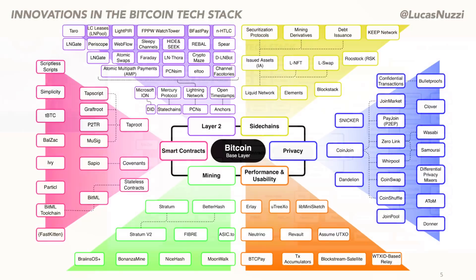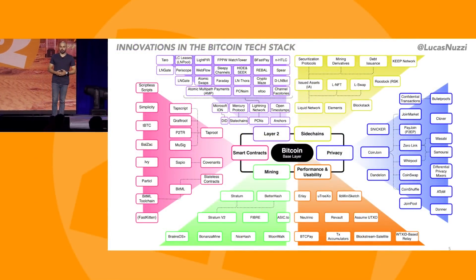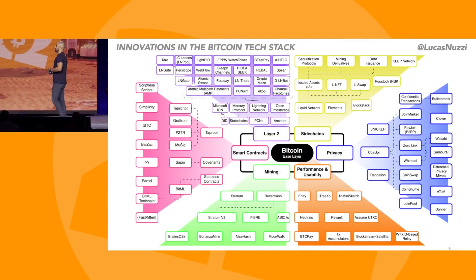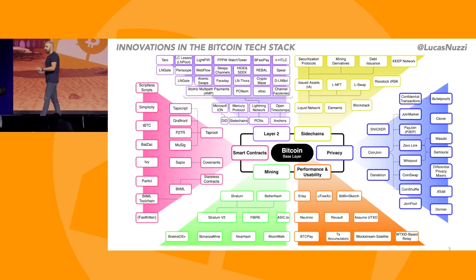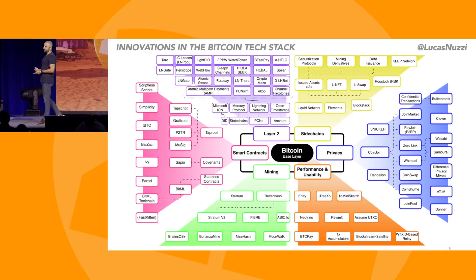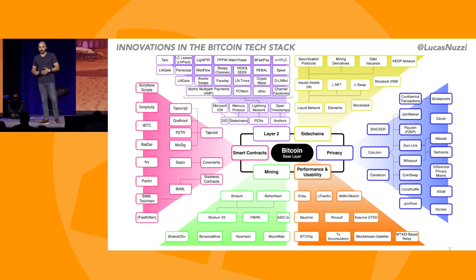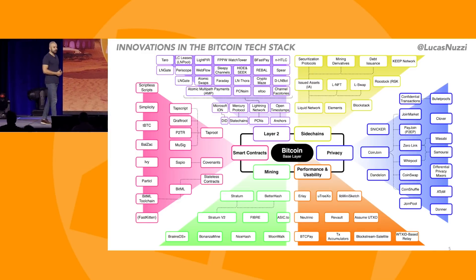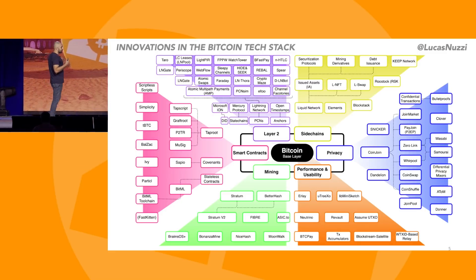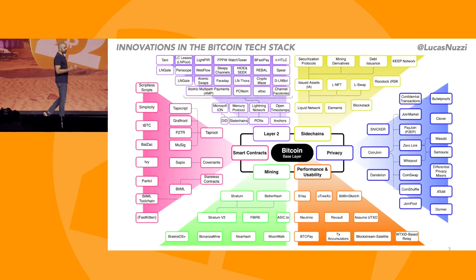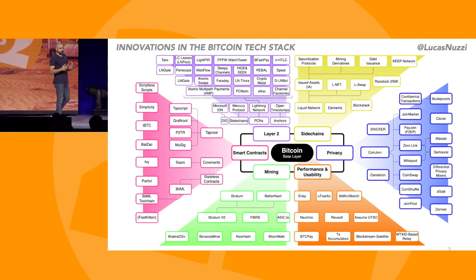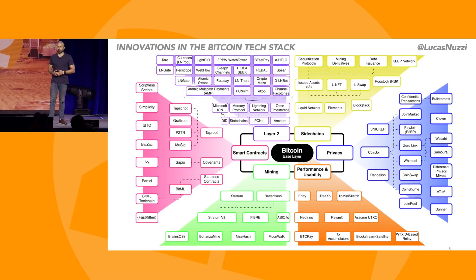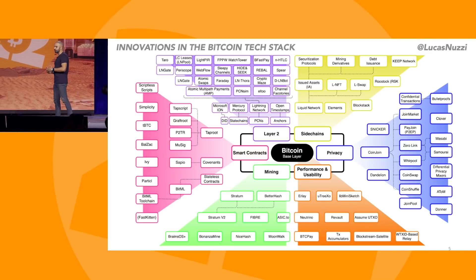If you start looking into the layer two section of this diagram, half a dozen of these protocols have been released in the past year alone. There's been a ton of interest from recent grads to build routing solutions for Lightning — routing protocols, rebalancing protocols — and to better analyze the privacy guarantees of Bitcoin and Lightning specifically. There's been a lot on statechains that I'm particularly excited about.